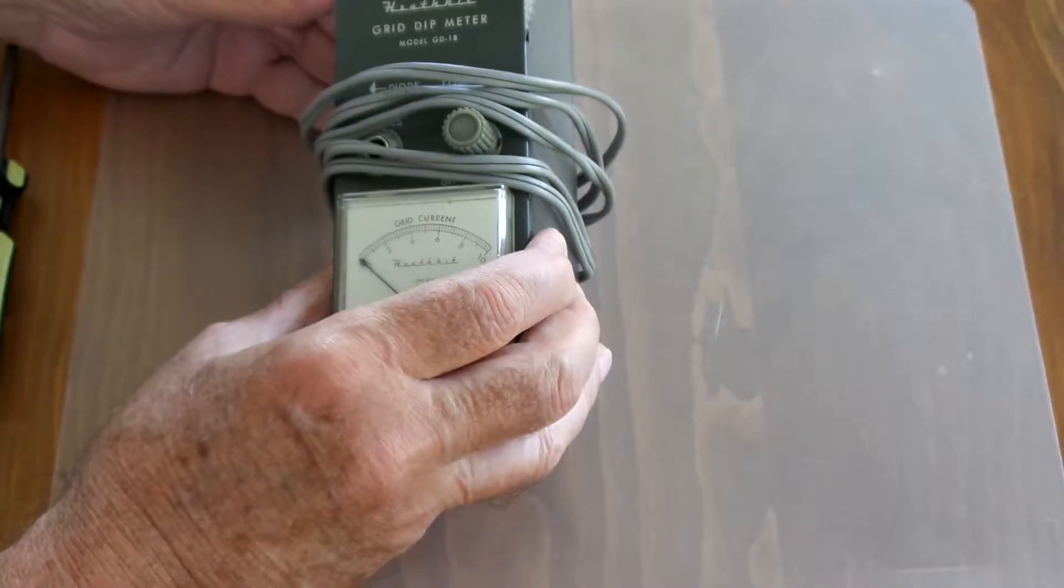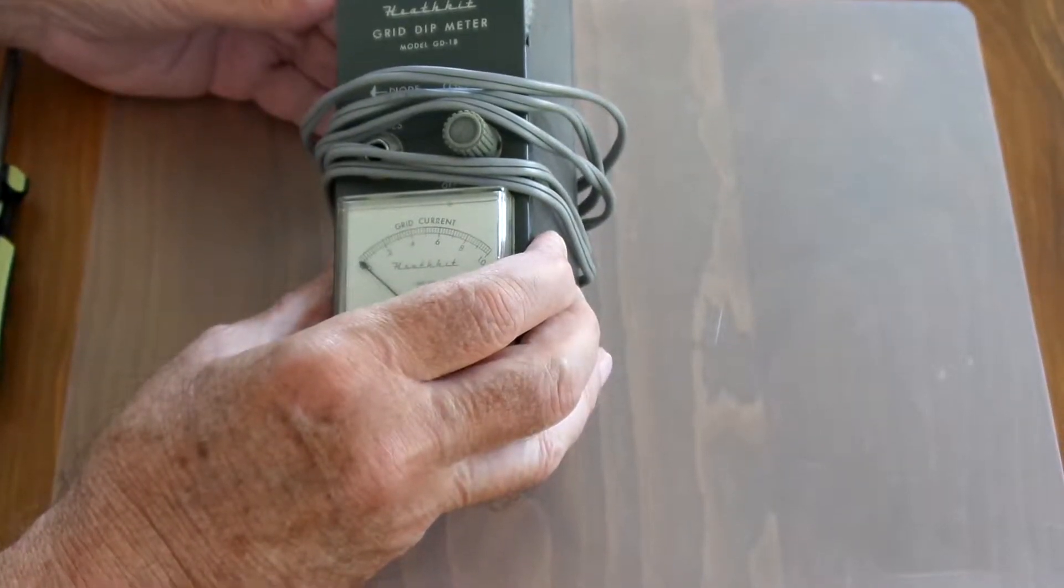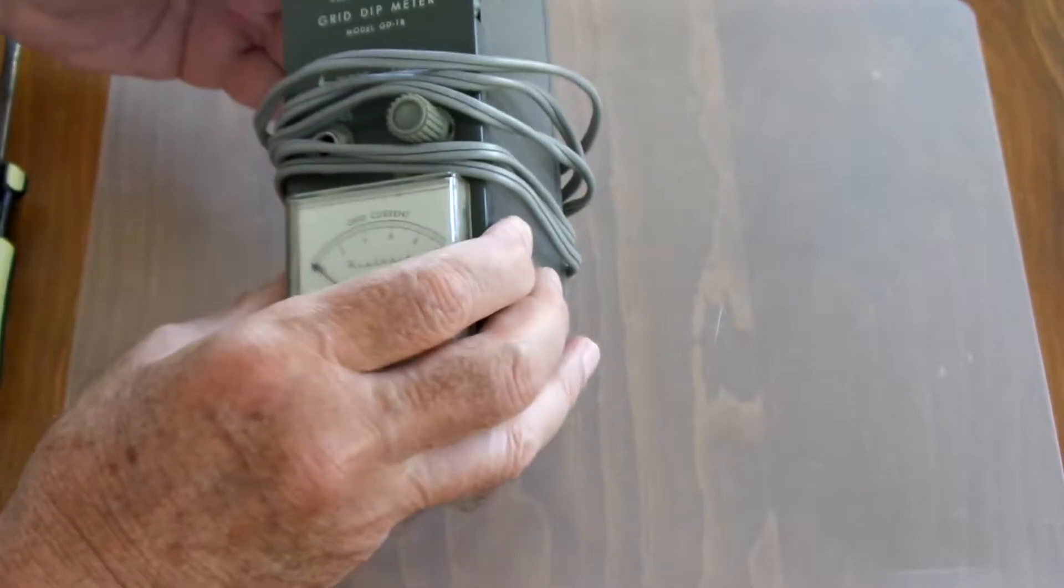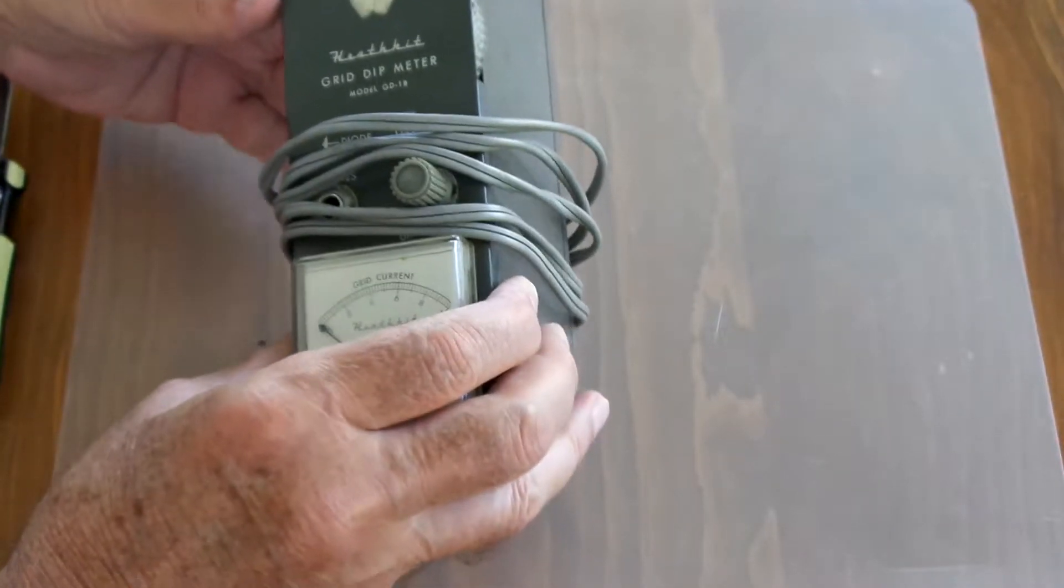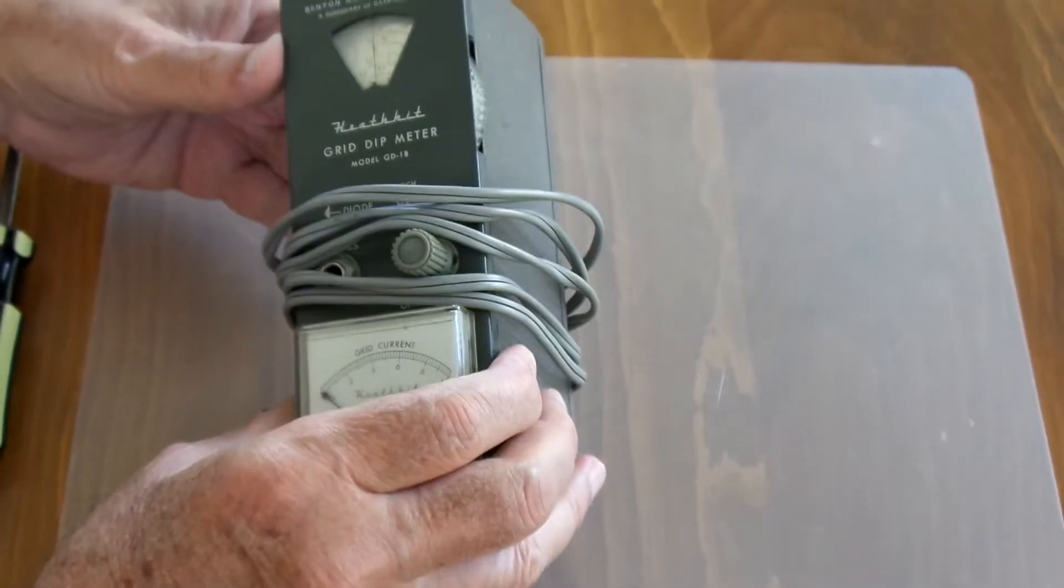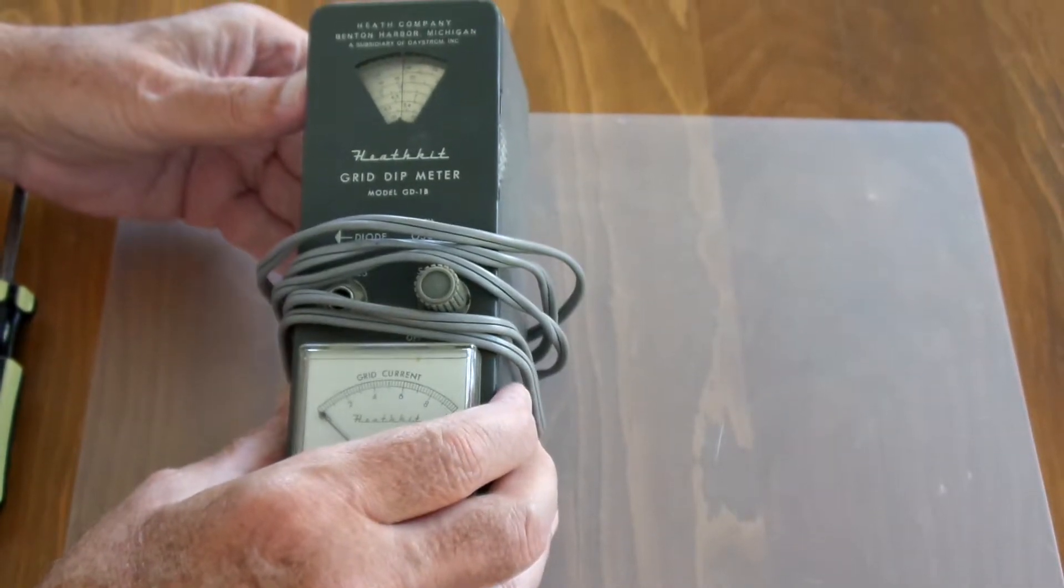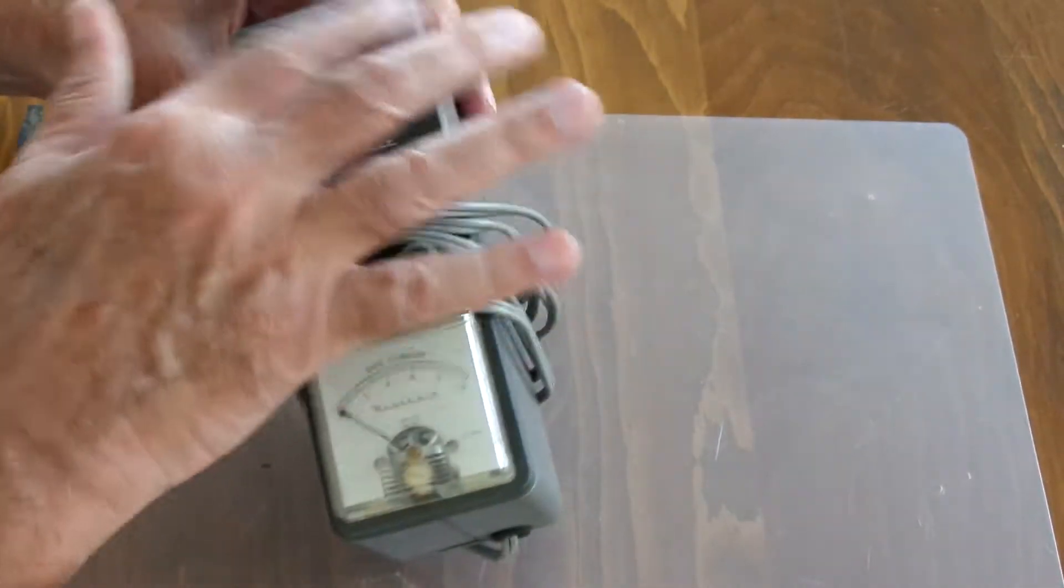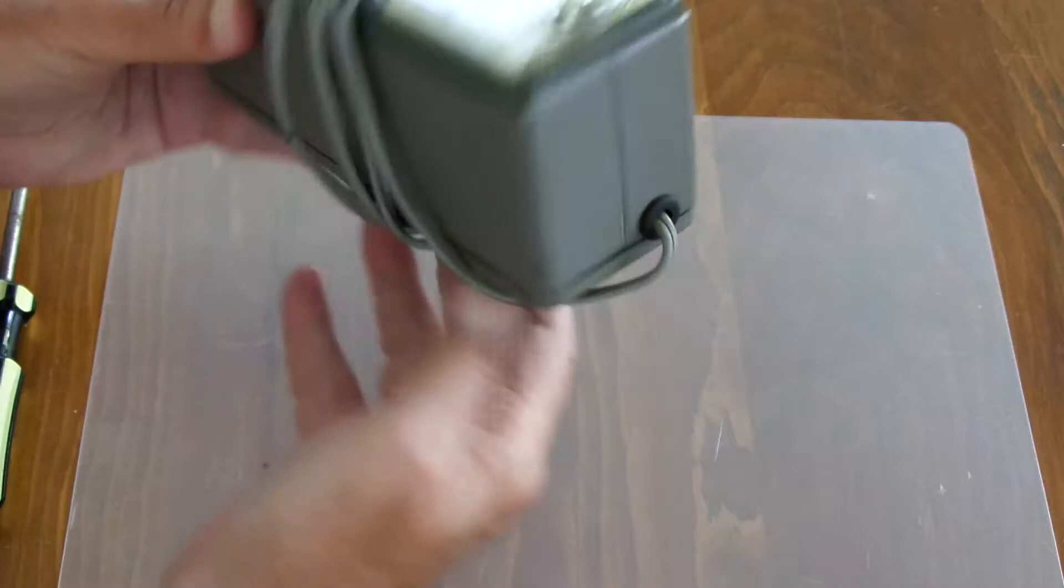I picked up this Heath Kit grid dip meter for five dollars. I doubt if I'll ever dip any grids with it, but I think I'd like to use the front of this somehow. So let's take it apart and see if any of this is of value.